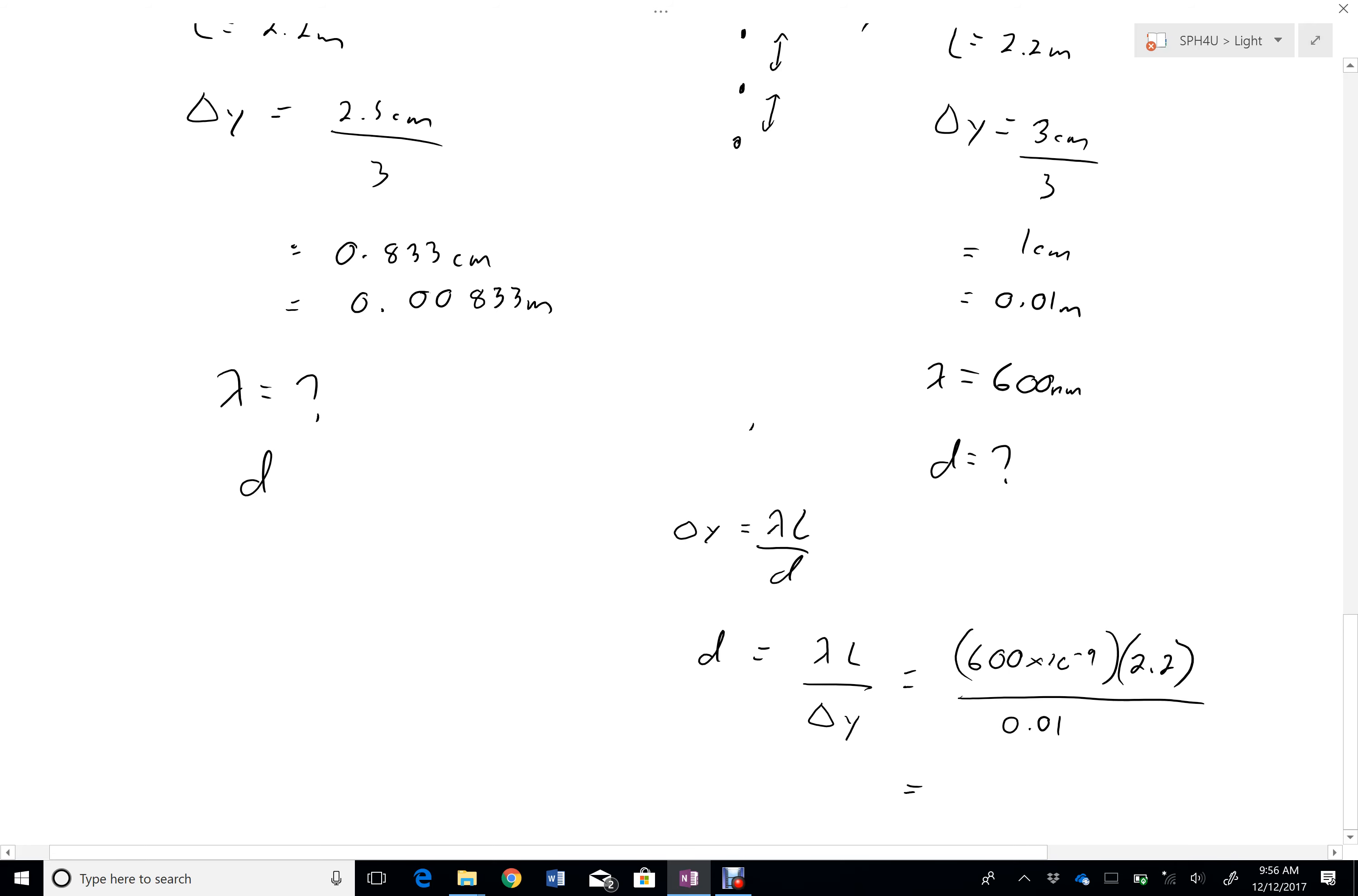My D, in this case, works out to be 1.32 times 10 to the negative 4 meters. So with that in hand, I can come over here.